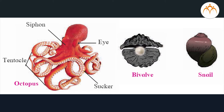These animals are aquatic or terrestrial. Most of the aquatic molluscs are marine, but few are freshwater dwellers too. The body of these animals is triploblastic, eucoelomate, non-segmented, and soft. Except animals like snail, their body shows bilateral symmetry. Their body is divided into three divisions: head, foot, and visceral mass.